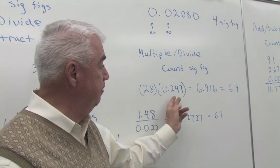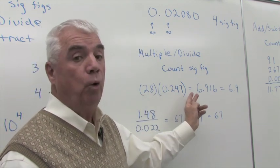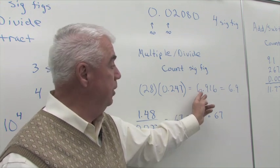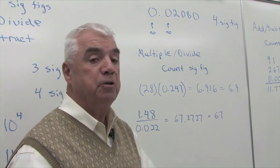Here I have two significant figures, three significant figures. My answer can only have two. So we need to round that 6.916 to 6.9.